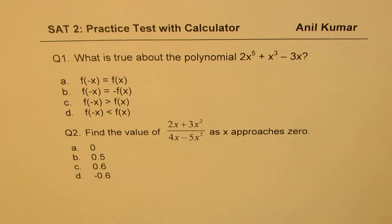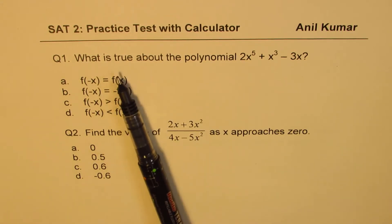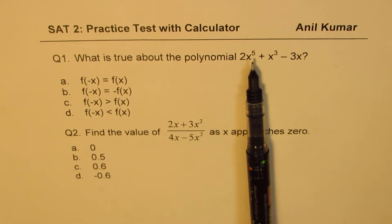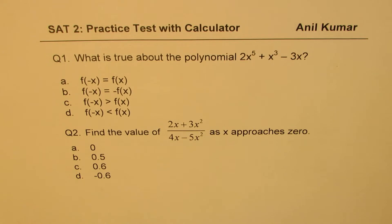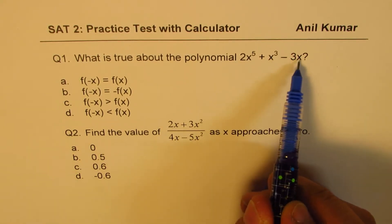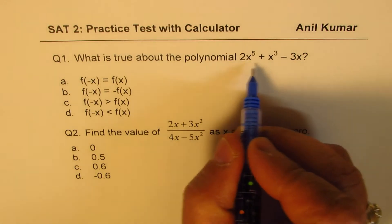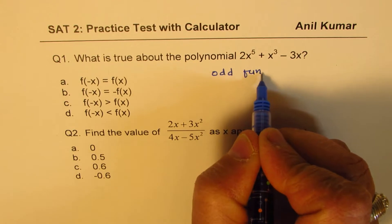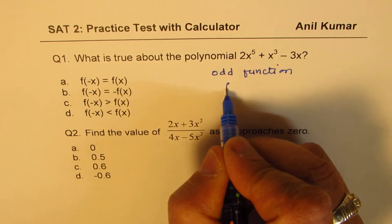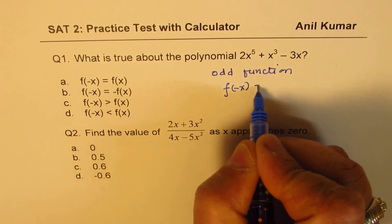Let's begin with the very first question: what is true about the polynomial 2x to the power of 5 plus x cubed minus 3x? Four choices are given — you can pause the video, answer the question, and then look at my suggestions. In this polynomial, all the exponents are odd, so this particular polynomial is basically an odd function.